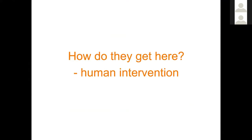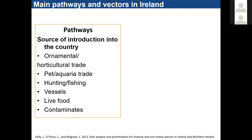Knowing the impacts, we need to understand how invasives get here and what actions to take. They're here because of human intervention. From a 2013 report, the main ways invasive species arrived historically in Ireland include trade for ornamental and horticultural purposes, the pet and aquaria trade, introduction for hunting and fishing, attachment to vessels, live food imports, and contaminants of products and goods.